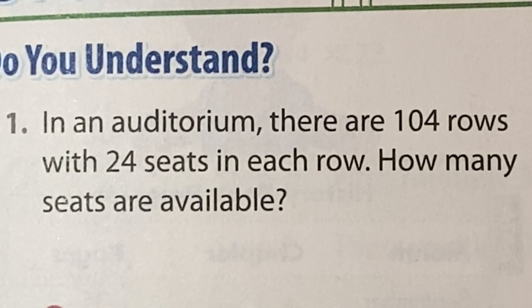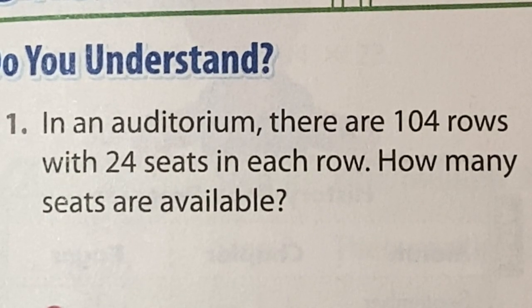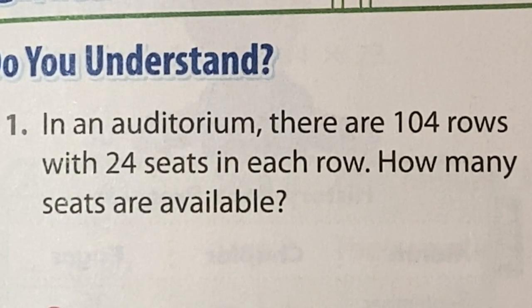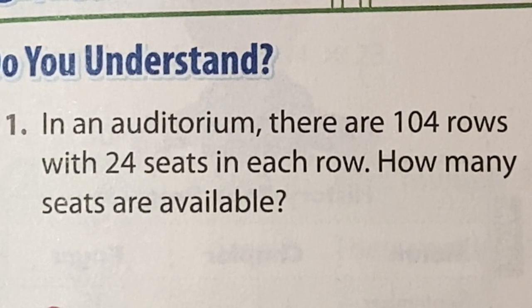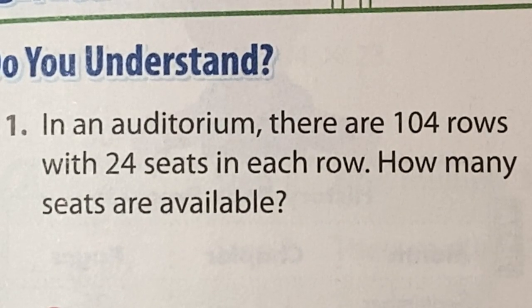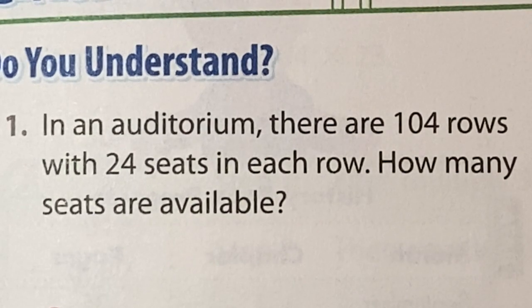Picture an auditorium. We have 104 rows of seats, and in each row there are 24 seats. So we have 104 rows, 24 seats in each row.